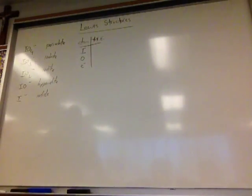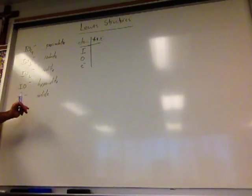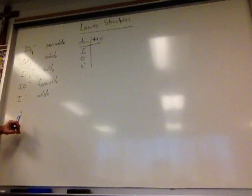We're doing the Lewis structure of the iodate series: periodate, iodate, iodite, hypoiodite, and iodide. We're going to see how the different rules for drawing Lewis structures come into play.